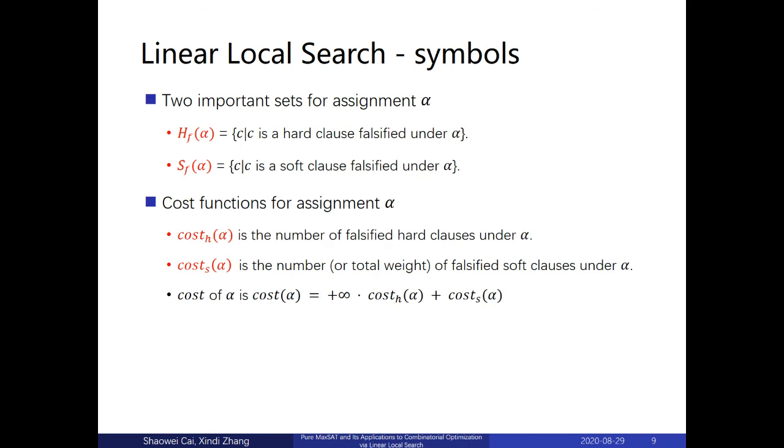These are some important concepts in our linear local search algorithm. We maintain two data structures. One contains the unsatisfied hard clauses under the current assignment, and the other contains the unsatisfied soft clauses under the current assignment. And we have two cost functions. One for the cost on hard clauses, and the other for the cost on soft clauses.